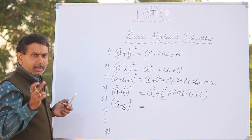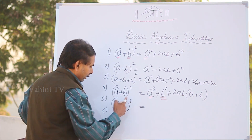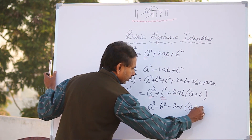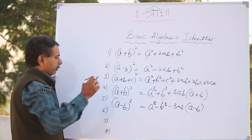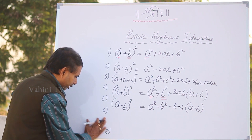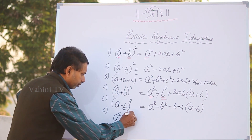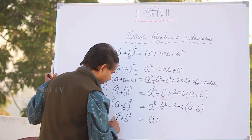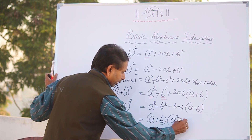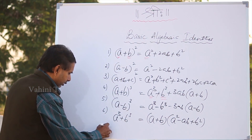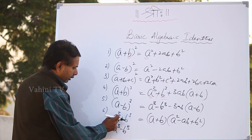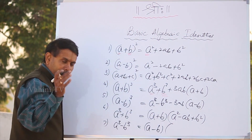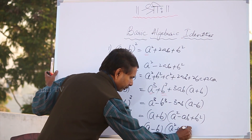Especially for 9th standard students. Idli cubed plus chutney cubed — what is the answer? a plus b is factored as a plus b into a squared minus ab plus b squared. What is a cubed minus b cubed? You can take it as: a minus b factor, into a squared plus ab plus b squared.